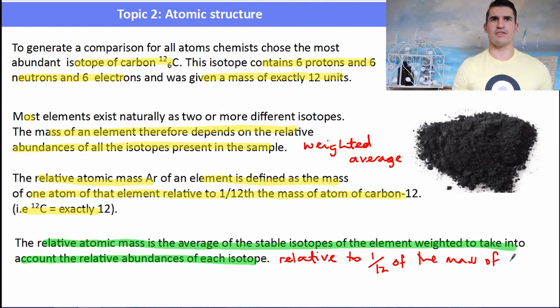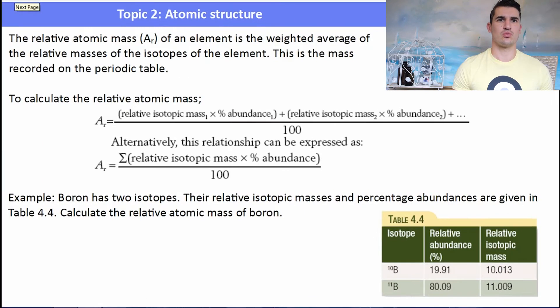Just to go over that again, the relative atomic mass of any element is defined as the mass of one atom of that element, relative to one-twelfth of the mass of a carbon-12 atom. Carbon-12 weighing exactly twelve atomic mass units. So that gives us a standard to compare all of the other elements.